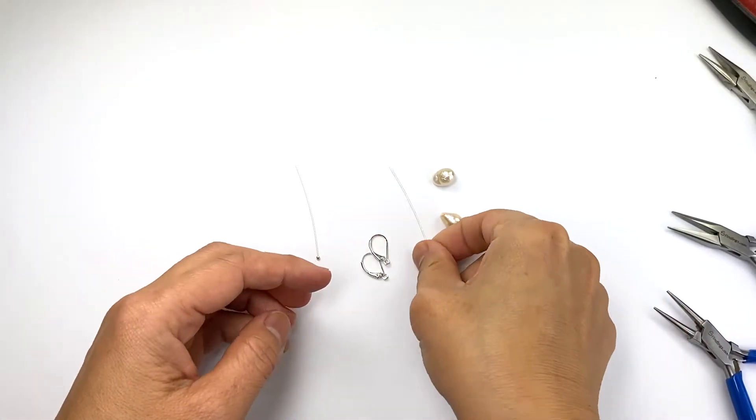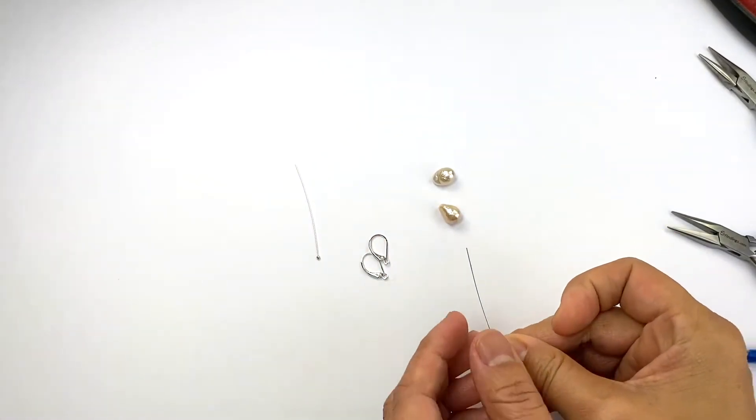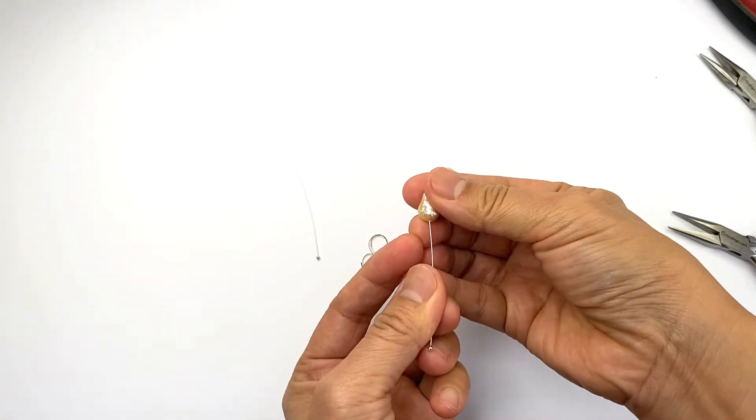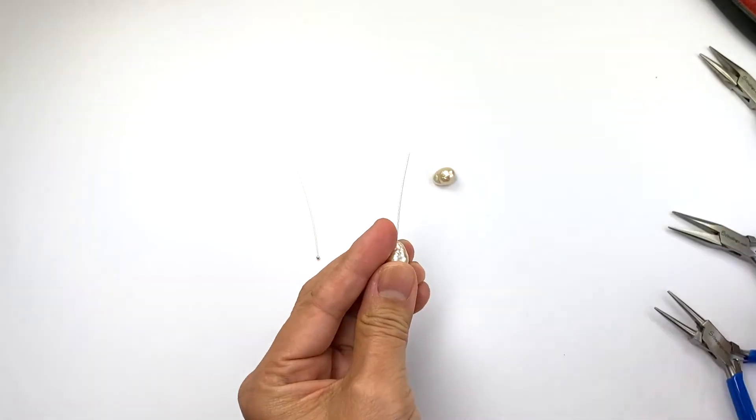I want to show you how to make a pair of lever back earrings that has the most impact. Basically you need a bead and a head pin like this and I just thread it through.